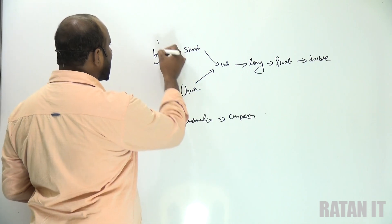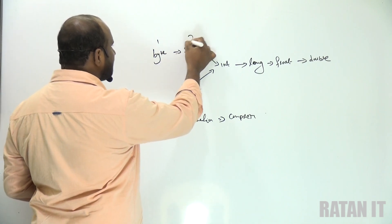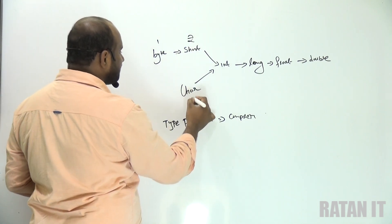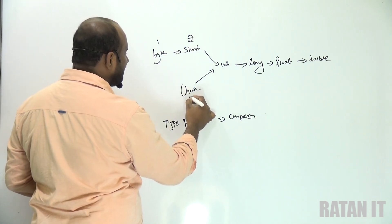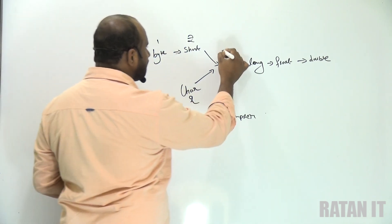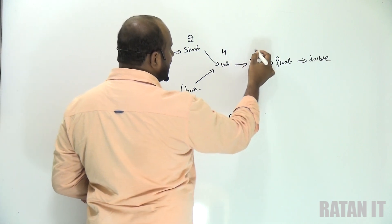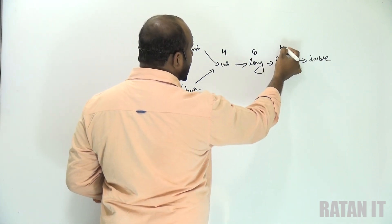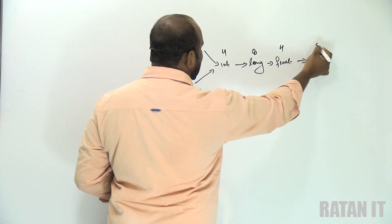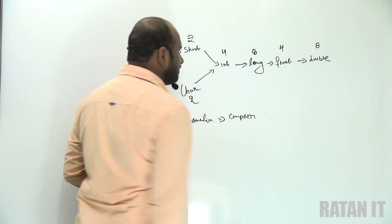Left to right in terms of memory size means: byte is one byte, short is two bytes, char is two bytes, int is four bytes, long is eight bytes, float is four bytes, and double is eight bytes.